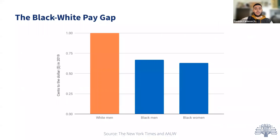While there's a gap between worker pay and productivity, there's also a pay gap between races. White men are earning more cents to the dollar — that's the orange bar on the left — in comparison to Black men and women, the blue bar on the right. Because Black, Indigenous, and people of color are getting paid less and disproportionately, they're not able to afford living in the cities that are providing these good jobs.